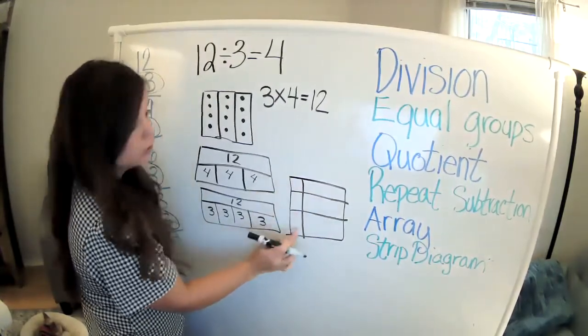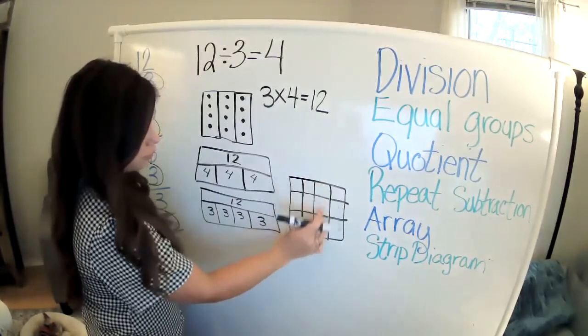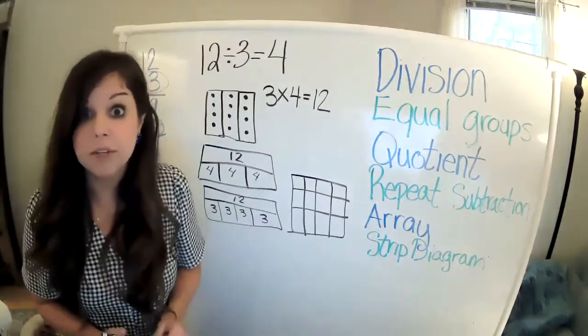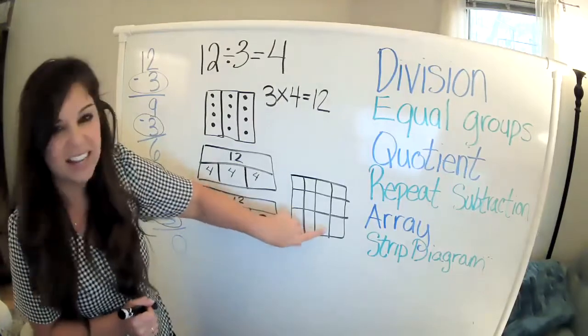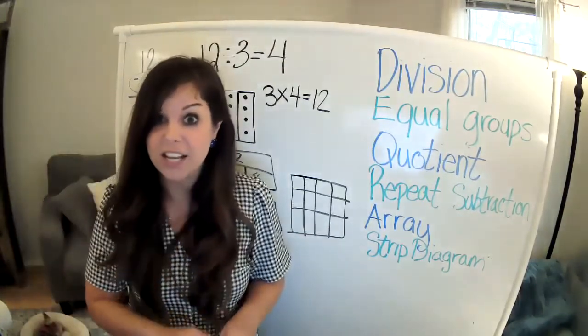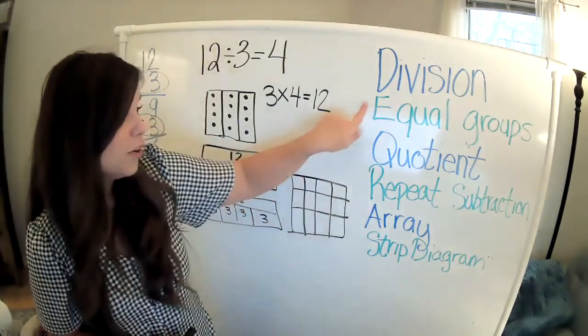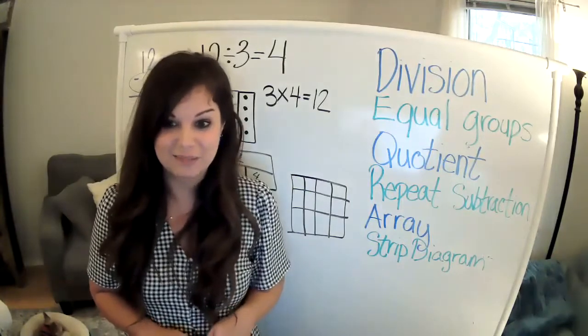So here is one group, two groups, three groups, and four groups. Now, I am not a wonderful artist, so you'll notice that my groups are not exactly equal. But you and I both know that in order for it to be a division problem, we need equal groups, and we need an equal amount in each group.